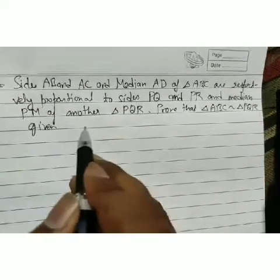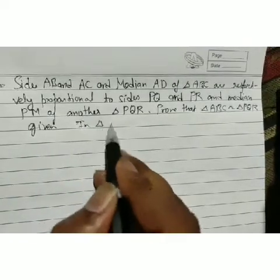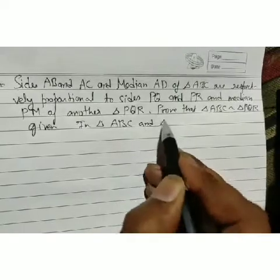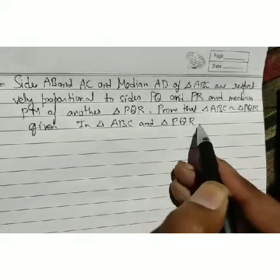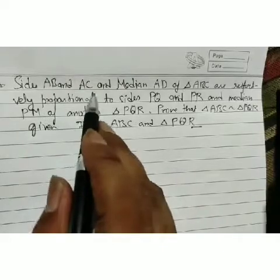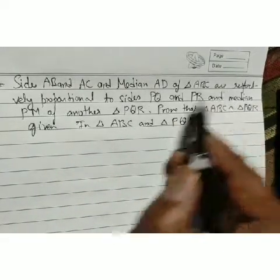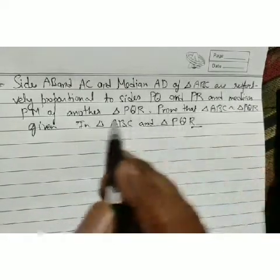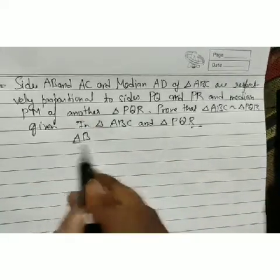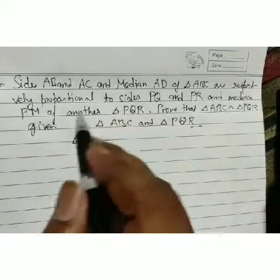In triangle ABC and triangle PQR, we are given that AB, AC, and median AD of triangle ABC are respectively proportional to PQ, PR, and PM. So: AB/PQ = AC/PR = AD/PM.